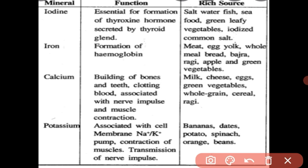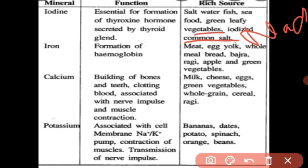The rich sources of iodine include table salt (NaCl), water, fish, seafood, green leafy vegetables, and iodized common salt.